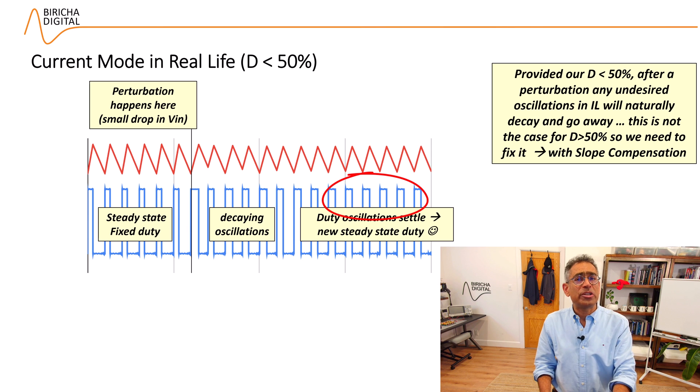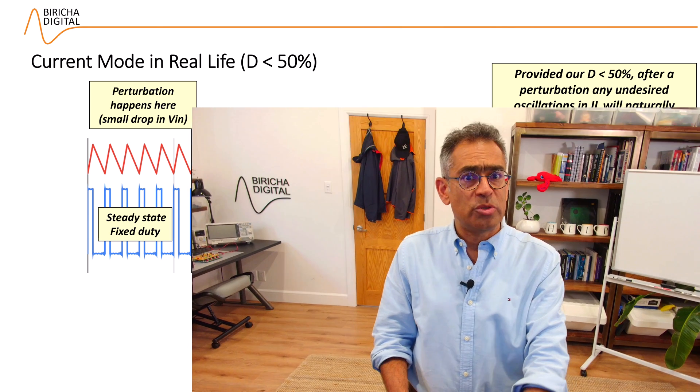That is why we typically do not worry too much about duties less than 50%. Strictly speaking, it's not the case that everything is fine until 49.999% and suddenly at 50% things go wrong. As you approach 50%, subharmonic oscillations can and do happen, even for duties as low as 30–35%. Really, beyond 20–30% you need to look after subharmonic oscillations. Luckily, most modern chips add a slope compensating ramp to get rid of subharmonic oscillations.